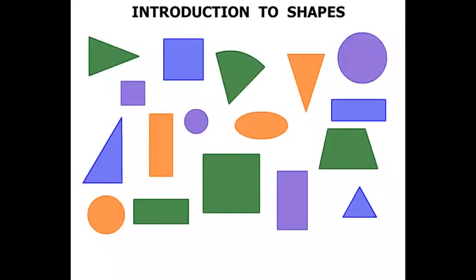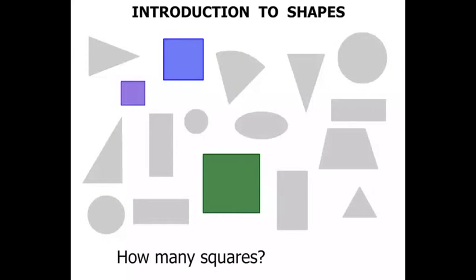Now we've got a whole bunch of different shapes there. And the first question is, how many squares? Well let's just look at the squares. We'll fade out everything else. So all we've got there are the squares that are colored. One. Two. Three. We've got three squares. Terrific.